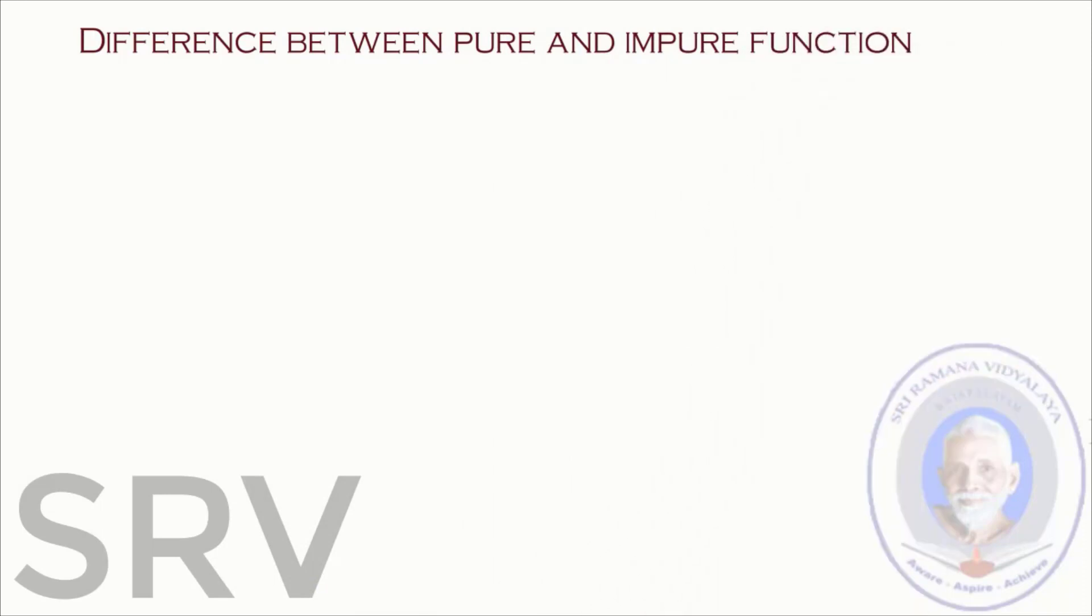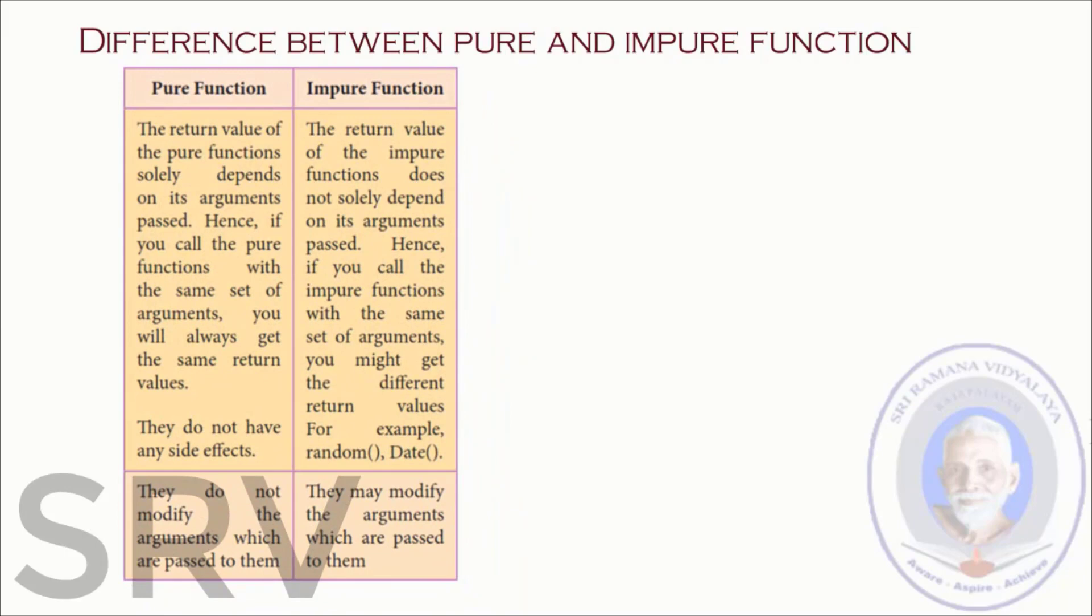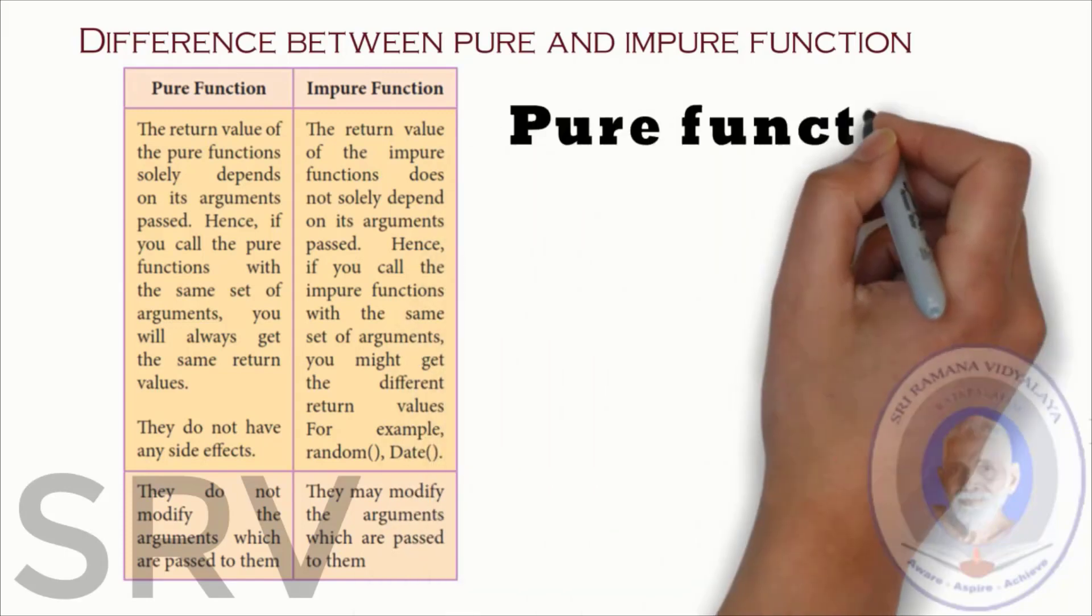Now let's see the difference between pure and impure function given in our book. The pure function. The return value of pure function solely depends on its argument passed. Just note the word solely. It means fully or purely. As it depends purely on argument passed. Hence you call the pure function with the same set of argument you will always get the same return value. They do not modify the arguments which are passed to them.